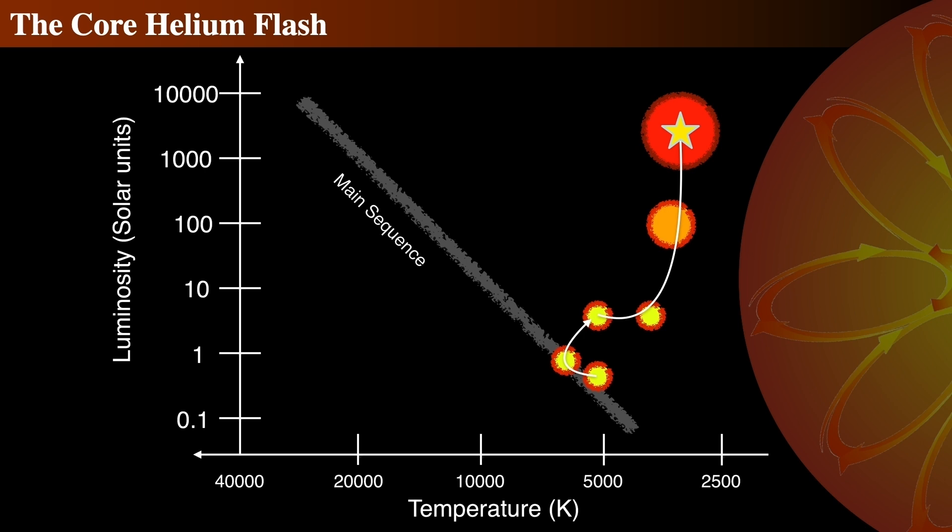It occurs because of the combination of the basically non-existent temperature dependence of electron degeneracy pressure and the extreme temperature dependence of the triple alpha process. The flash's energy must go first into lifting the degeneracy, turning the electrons back into an ideal gas state. This phase transition takes a lot of energy. Only then can the energy go into thermal and kinetic energy.